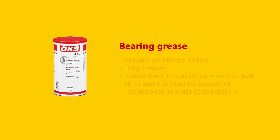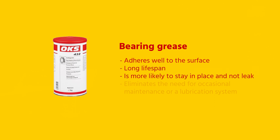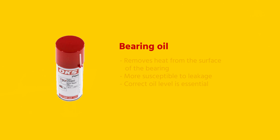To get you started with the selection, I will briefly explain all three lubricants. Bearing grease is the most commonly used type of lubricant. It adheres well to the surface, has a long lifespan, and, compared to oil, is more likely to stay in place and not leak. In addition, in some applications, pre-lubricating with bearing grease can eliminate the need for occasional maintenance or a lubrication system.